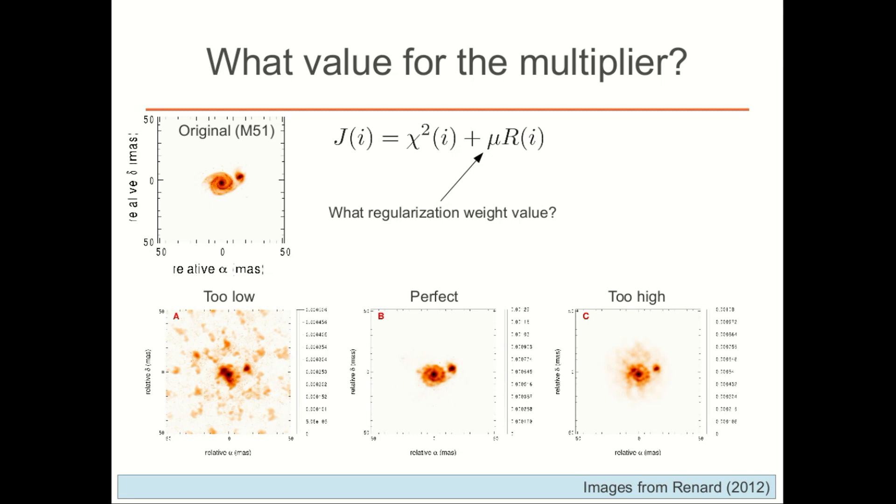Now let's say you've picked a regularization function that you think has some properties of what your object is going to be represented by. The next question is, what value do you use for the regularization multiplier? Again, on the top left, we see the original image of M51. Now let's say that we pick a regularization weight that's too low. That means that there's going to be a lot of emphasis placed on the chi-squared, and so you can end up overfitting your data. So you end up with an image like what you see in the lower left, where there's a lot of stray flux because you're just basically overfitting the data. However, if you pick a regularization weight that's too high, you end up picking up properties of the regularizer and not as many properties of the data. And so you end up with an image like what's reconstructed to the lower right. However, someplace in the middle, you can form a perfect image if you can find that happy sweet spot.